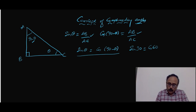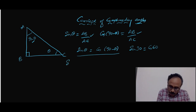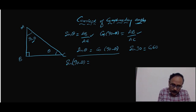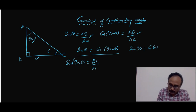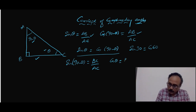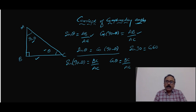Similarly we can observe the reverse also. sin(90 minus θ) equals perpendicular for that angle — BC is perpendicular, so BC by AC. And for cos θ, BC is the base, so BC by AC. Therefore sin(90 minus θ) is equal to cos θ, and cos(90 minus θ) is equal to sin θ.